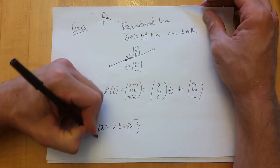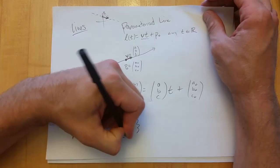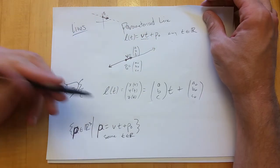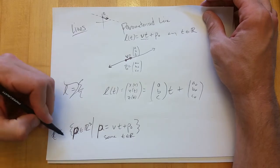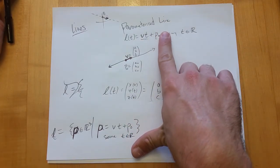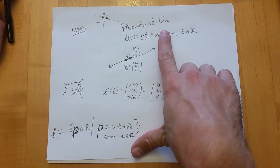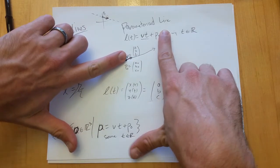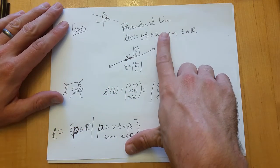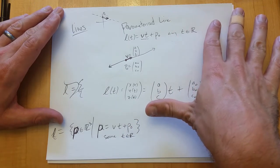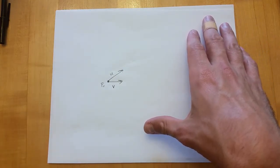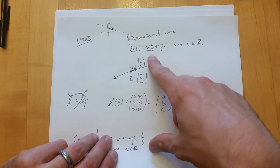In set notation, a line would be: any u in R³ such that u = v·t + p0 for some t in the reals. It's a collection of everything for all t values. It's not quite all linear combinations — it's all linear combinations with an offset.